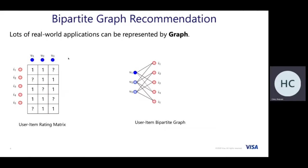In terms of a graph, we can represent this matrix as a bipartite graph. On the left-hand side we have user nodes, on the right-hand side we have item nodes, and the edge between user and item represents the user preference for these items.